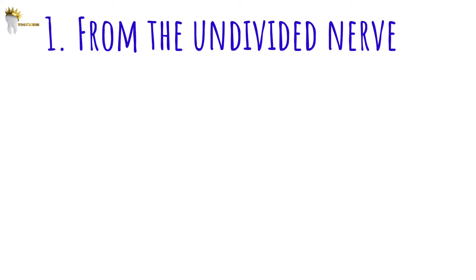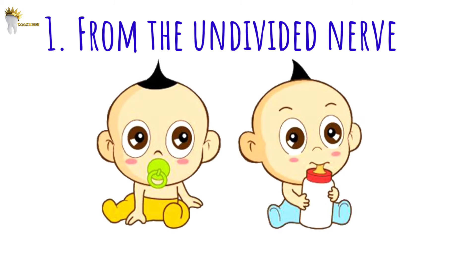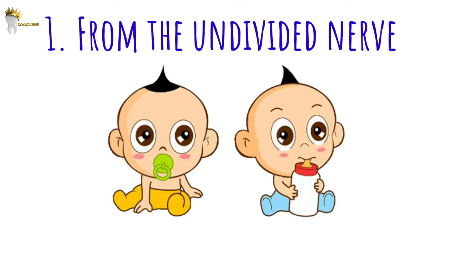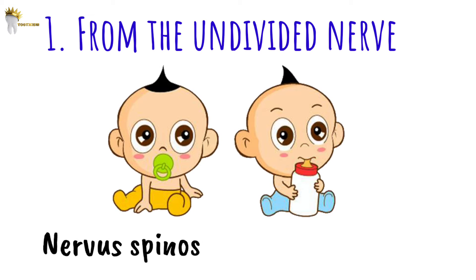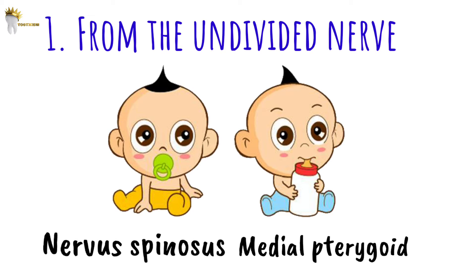From the undivided nerve trunk, two branches are given off: nervus spinosus and the medial pterygoid nerve.